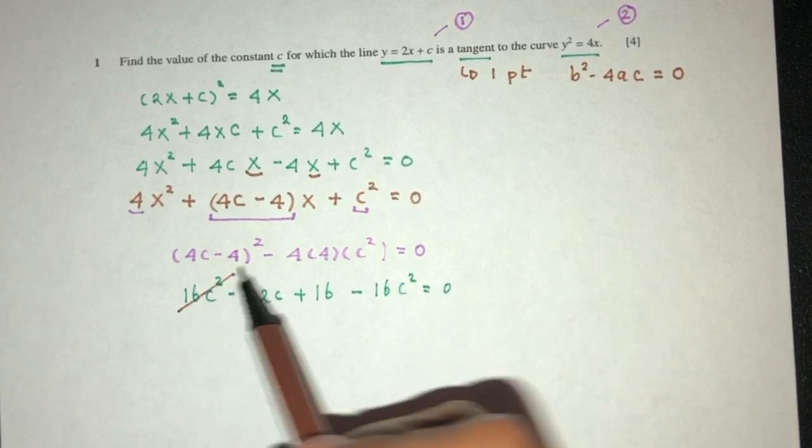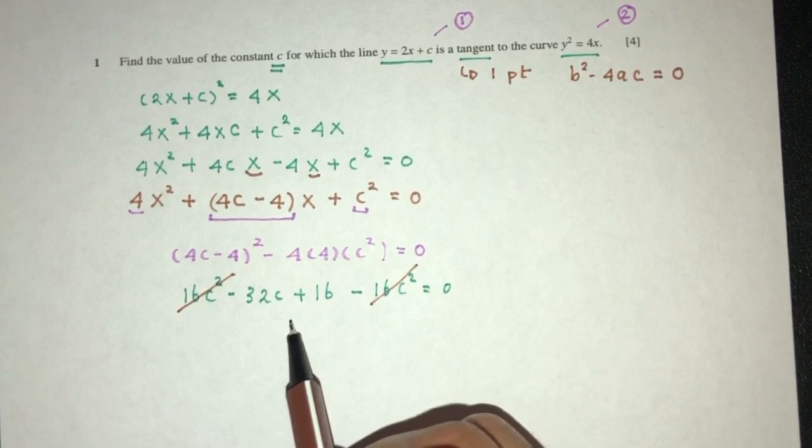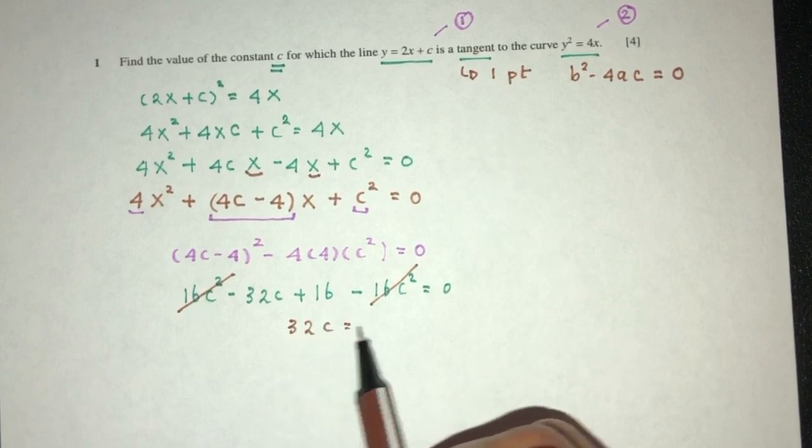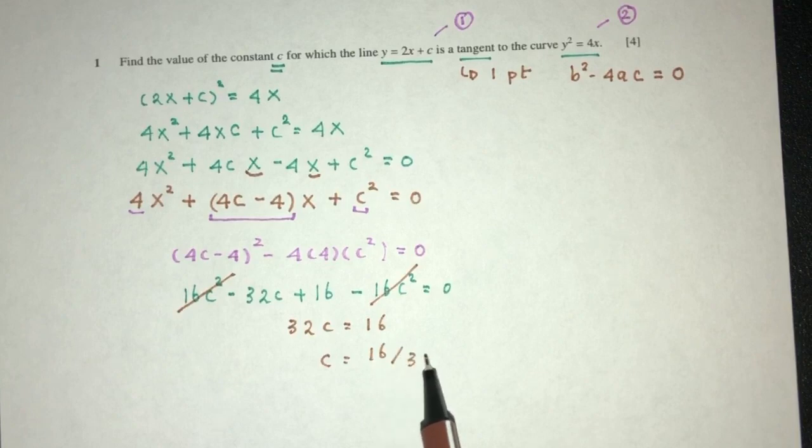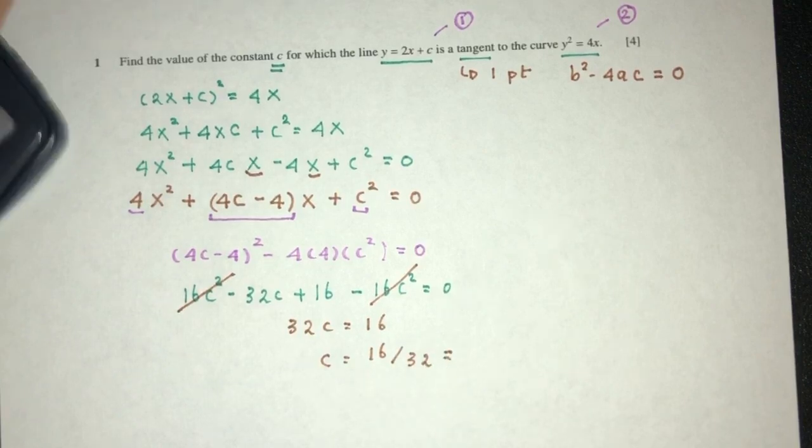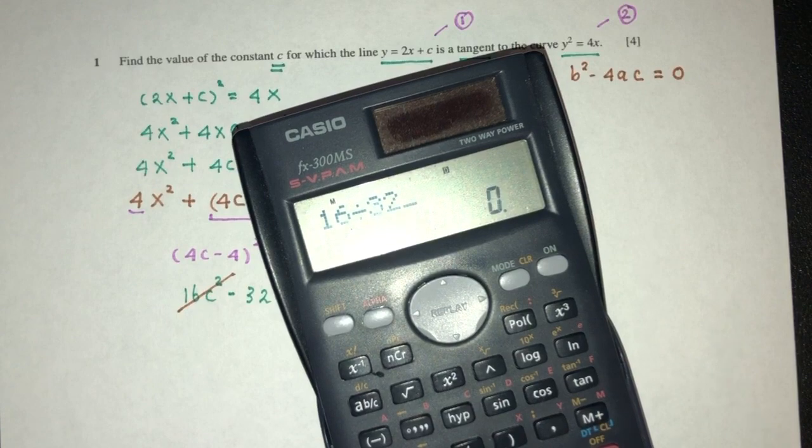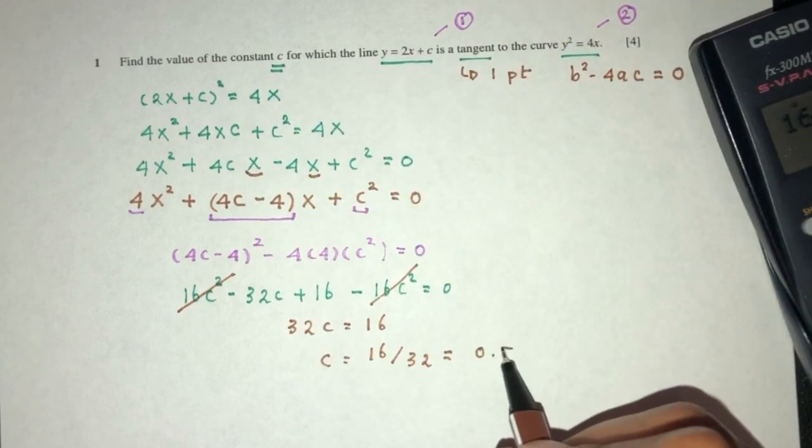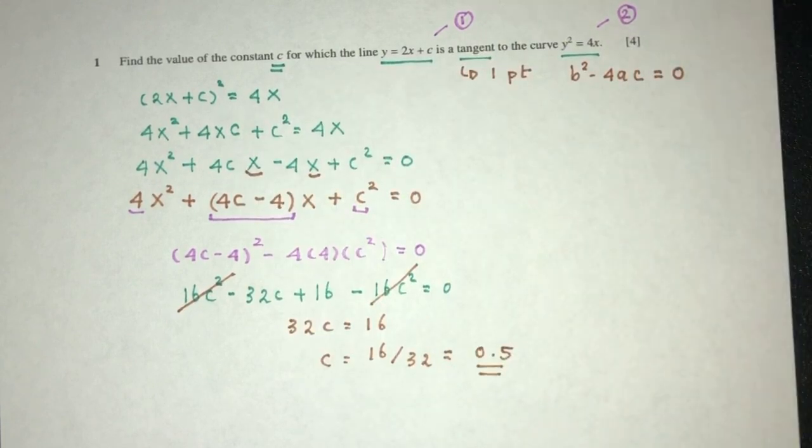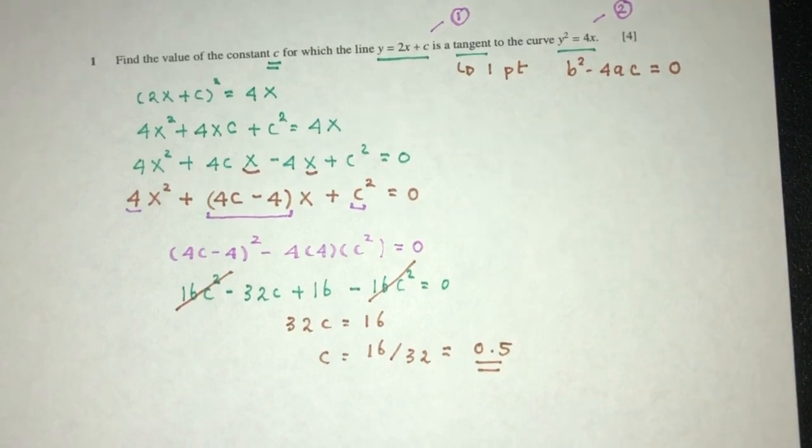Then we have 32c has to be 16. So c has to be 16 divided by 32, which will be half. You can always double check to see if that is correct. Indeed, the value of c will be 0.5, and that will be question 1.